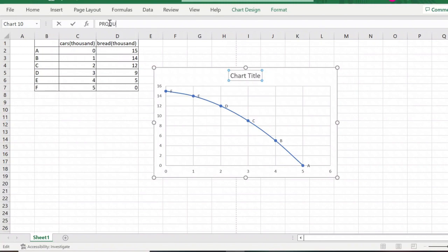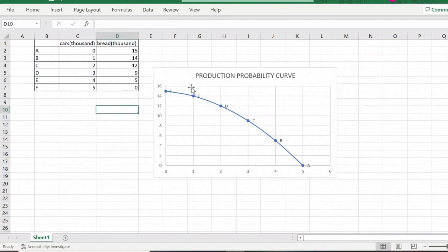Now we have to change the chart title. We go to the formula bar again and just type Production Probability. Okay. Now the chart title is in the chart.